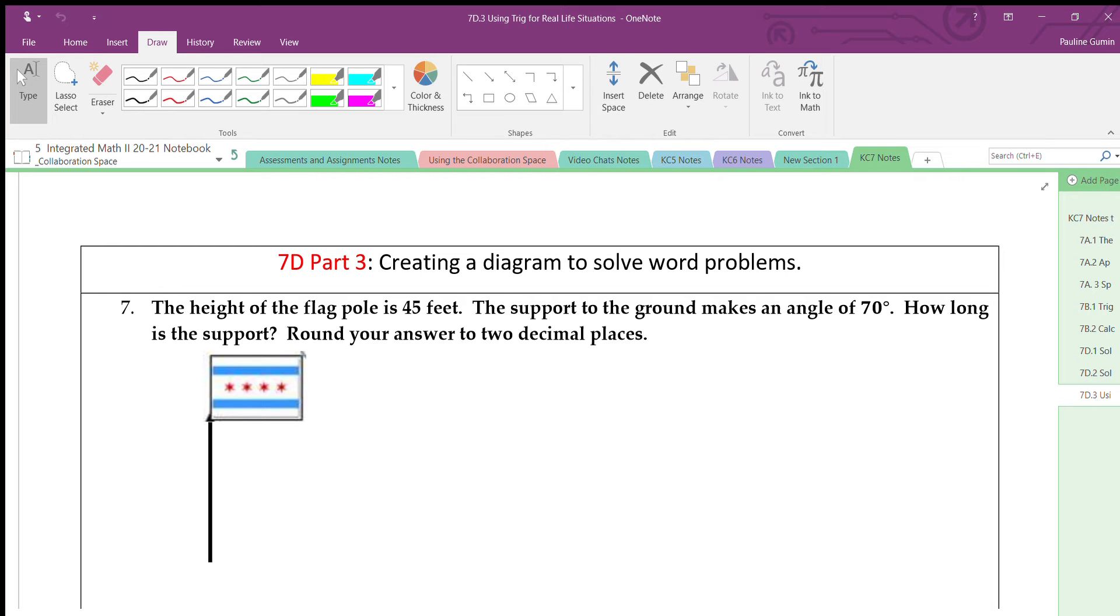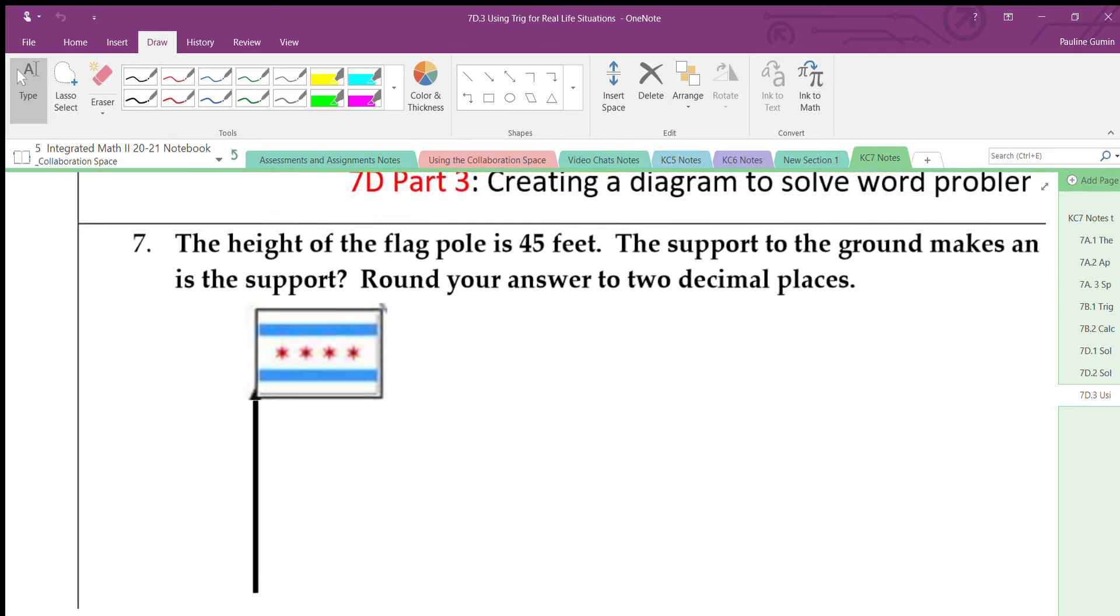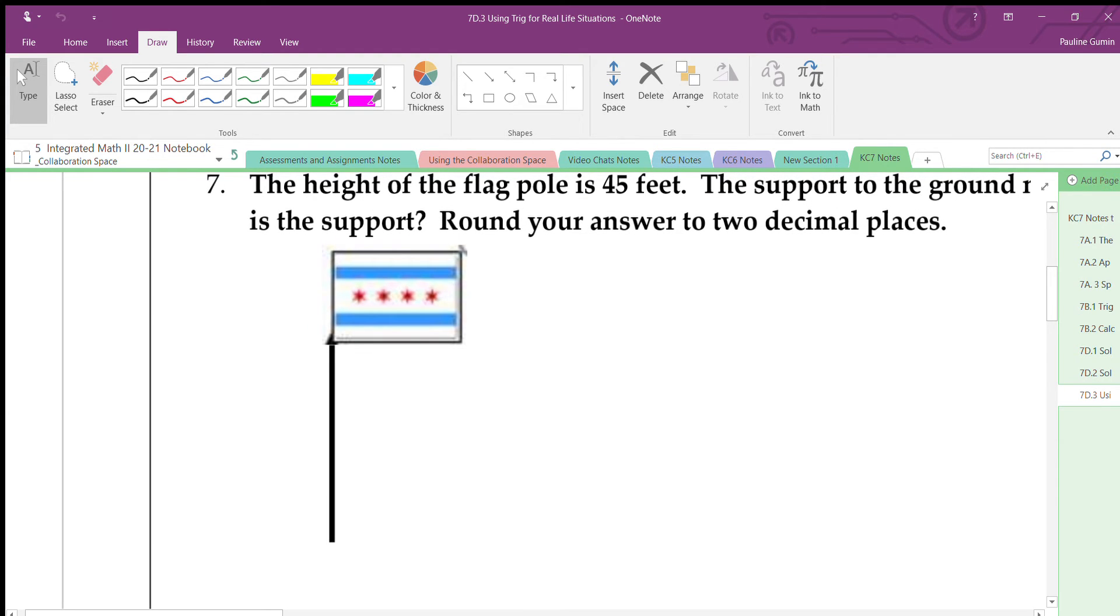The height of this beautiful Chicago flag, or of the flagpole, is 45 feet. The support to the ground makes an angle of 70 degrees. How long is the support? Round your answer to two decimal places. Okay, first of all, I need to draw this out. The pole is 45 feet, so I'm going to label it as such.